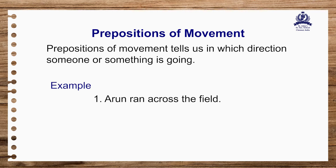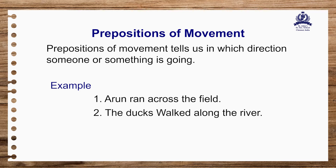Next we have prepositions of movement. Prepositions of movement tell us in which direction someone or something is going. For example: 'Arun ran across the field.' 'The ducks walked along the river.' The prepositions here are 'across' and 'along'.